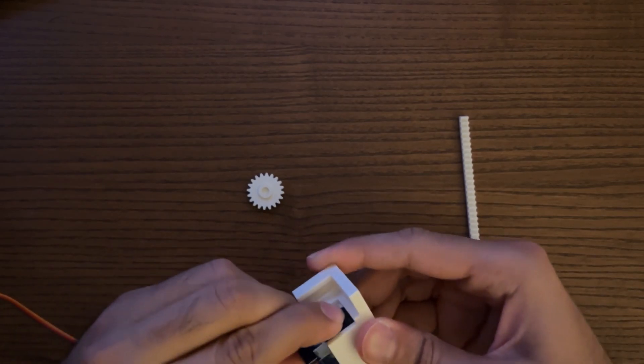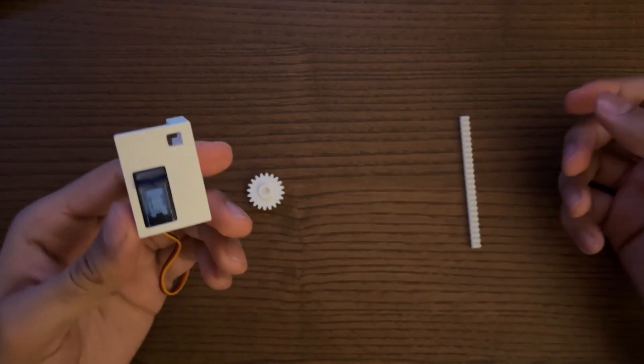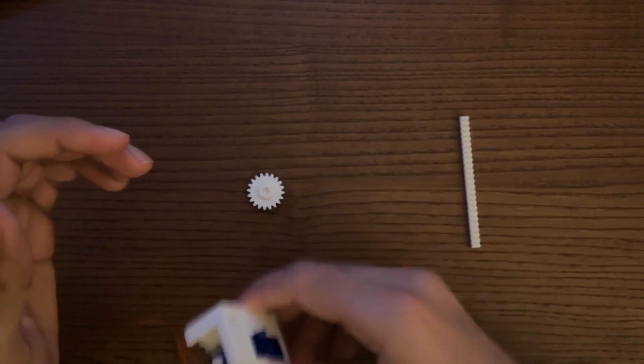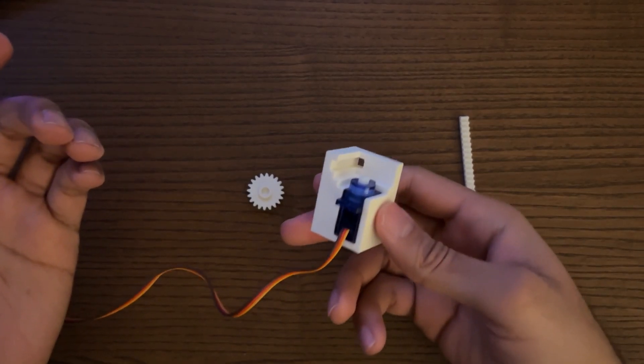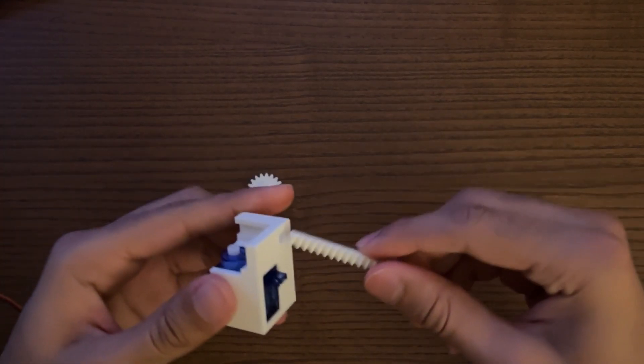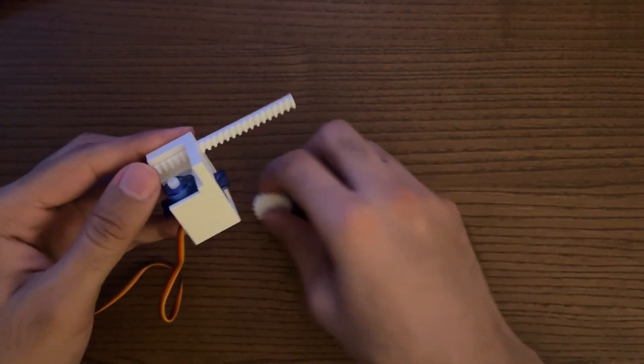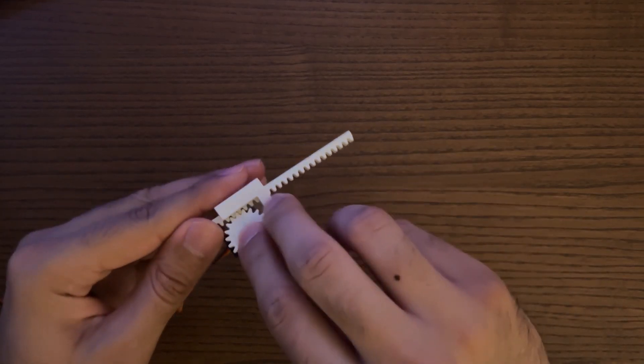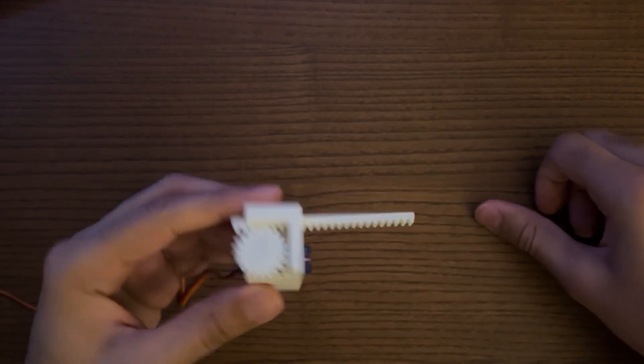The servo will just slide right in there, and if you download this yourself you'll see that it's pretty secure—it's not going to go anywhere. Once that's in place, you just line up the rack and then put the servo horn on, and you're done.